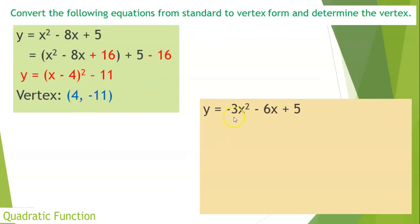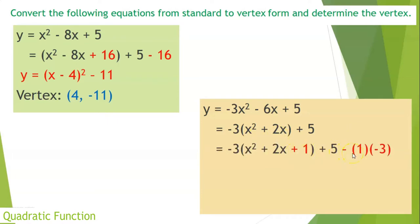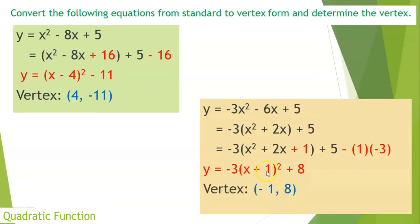Another example with a value for a: −3x² − 6x + 5. Factor out −3: −3(x² + 2x) + 5. Half of 2 is 1; square that gives 1. Add 1 inside, subtract 1 at the end, but multiply by −3 outside. Rewriting to binomial form: −3(x + 1)² + 3 + 5 = −3(x + 1)² + 8. The vertex is at (−1, 8). That's the process of getting the vertex.